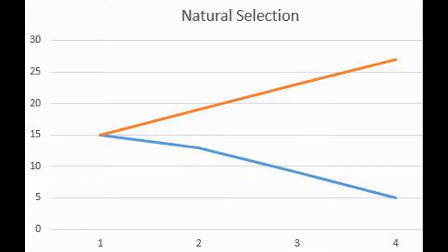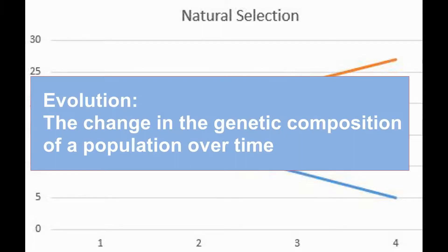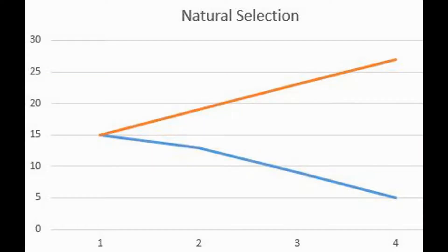Here, the y-axis is number of alleles and the x-axis is number of generations. Focusing only on the blue and orange, we can see that the blue is decreasing in frequency and the orange is increasing. So the question is: did this population evolve? The definition of evolution is simply a change in the genetic composition of a population over time. Did the genetic composition change? It did. We now have more orange alleles and fewer blue alleles after four generations.